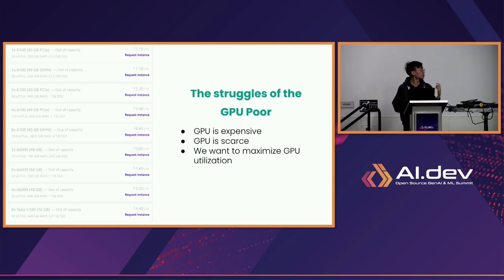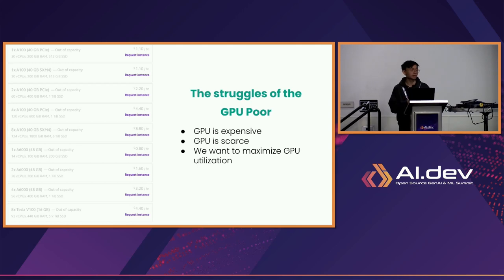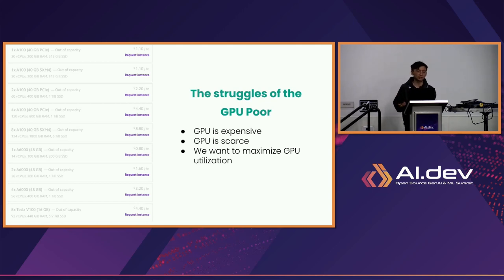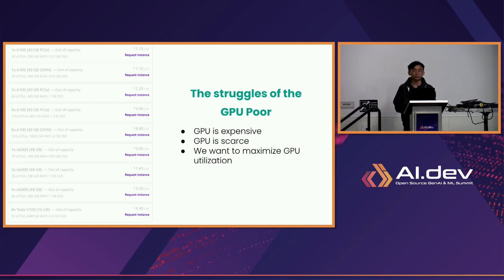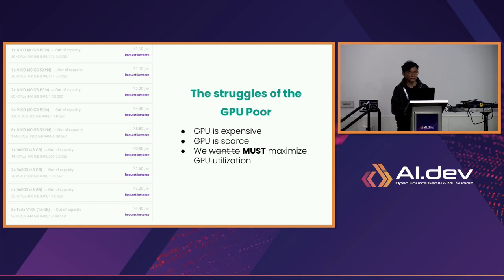But if you've ever tried to provision a GPU, you'd quickly notice that GPUs are quite expensive and quite scarce. If you tried to provision one recently, you may have been met with a screen showing no available capacity — even if you had the money. So with the limited GPUs you can provision, you want to maximize GPU utilization. Since you can't provision as many GPUs as you'd like, you must maximize utilization.